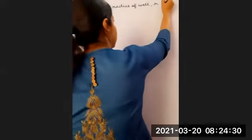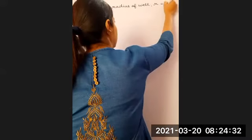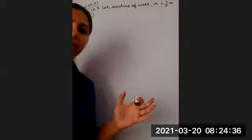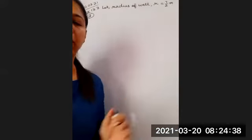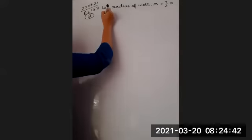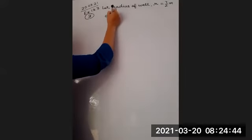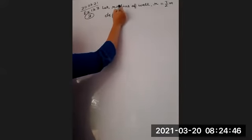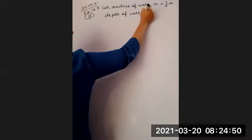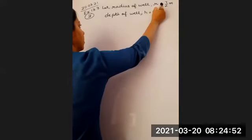Well, since we are given diameter, we will be showing it 7 by 2 meter. I would say leave it as it is, 7 by 2. Do not put it as 3.5 because 7 by 2 will be easier to calculate. Since we are given depth, we will be using the term depth of well. We can use the variable h only, 20 meter.